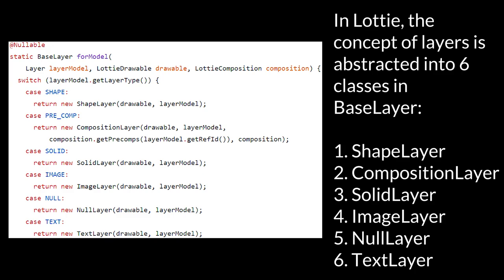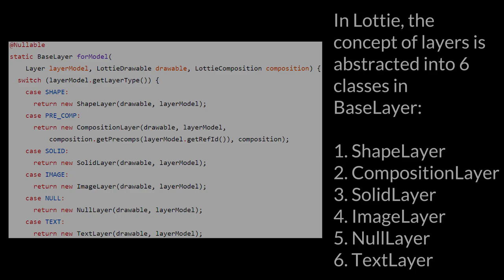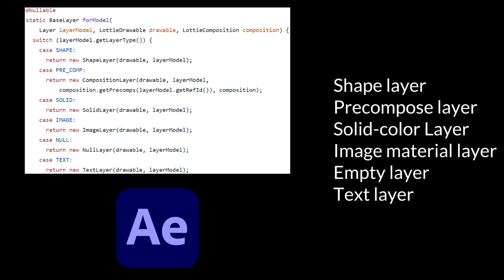In Lottie, the concept of layers is abstracted into six classes extending BaseLayer: 1. ShapeLayer, 2. CompositionLayer, 3. SolidLayer, 4. ImageLayer, 5. NullLayer, 6. TextLayer. Their corresponding relationship to layers in After Effects is — note, the naming might be slightly different: ShapeLayer → Shape Layer; CompositionLayer → Precomposed Layer; SolidLayer → Solid Color Layer; ImageLayer → Image Material Layer; NullLayer → Empty Layer; TextLayer → Text Layer.